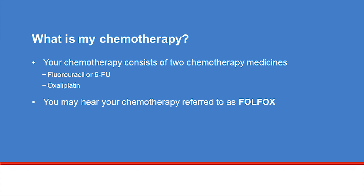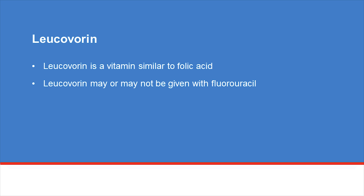Your chemotherapy, FOLFOX, consists of two medicines. One is called fluorouracil, or 5-FU, and the other is called oxaliplatin. Your doctor may have mentioned giving you an additional drug known as Bevacizumab, or Avastin. We will cover this targeted therapy at the end of the presentation. Sometimes, you may see an additional medicine called Leucovorin added to your treatment. This is not chemotherapy. Your doctor will determine whether it's appropriate for you.